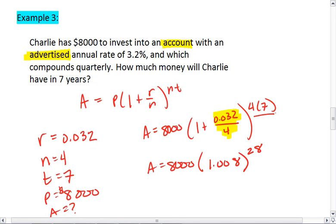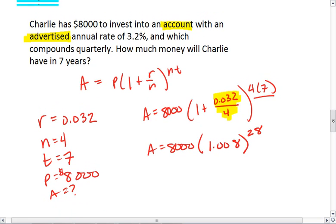All raised to the 28th, which is 4 times 7. Take care of the exponent first. We get 8,000 times 1.008 to the 28th, which is 1.25 if we round. Thus, Charlie has 8,000 times 1.25, which is $9,999.65 in his account. So just shy of that $10,000 mark.